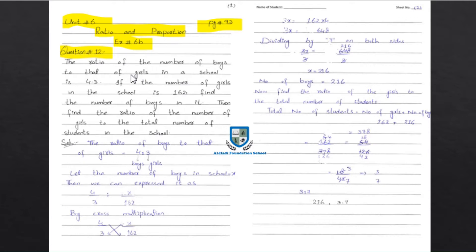Boys' ratio is 4 and girls' ratio is 3. This means in a school where boys' ratio is 4 and girls' ratio is 3, and the number of girls in the school is 162. We need to find the number of boys.